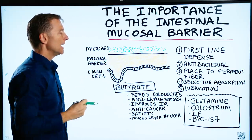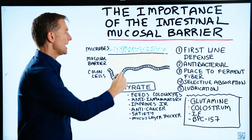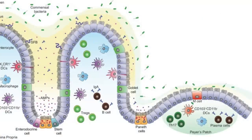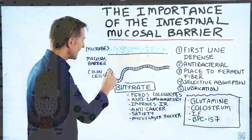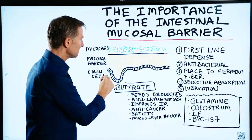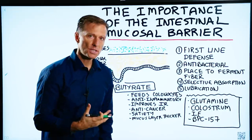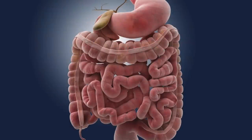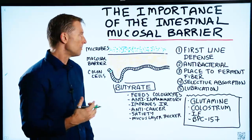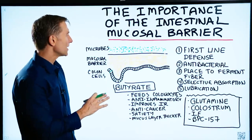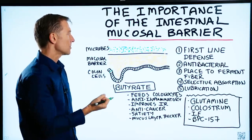It's thick, there's mucus in it, and then you have the cells of the colon called colonocytes. These little guys will selectively absorb certain nutrients. Now, most of your nutrients and your protein are absorbed in the small intestine. The large bowel is all about fermenting fiber, but there is some water and some electrolyte absorption.